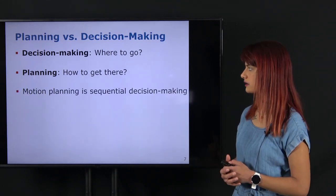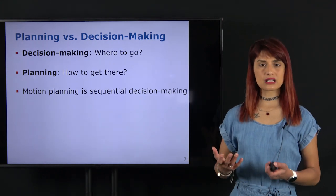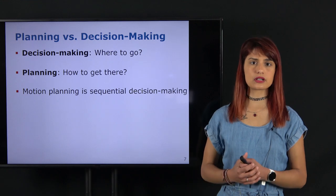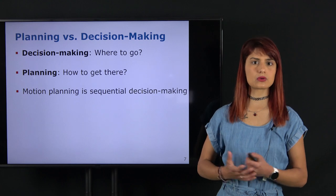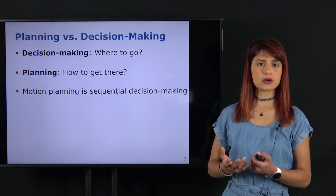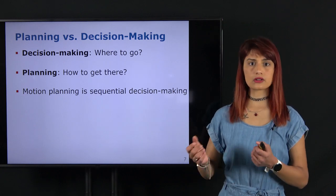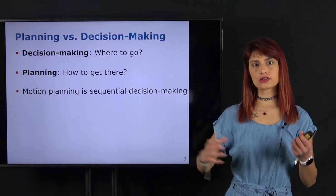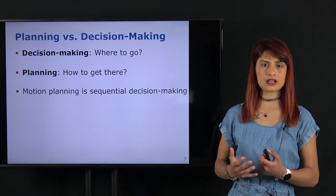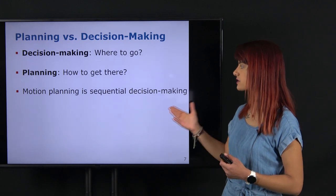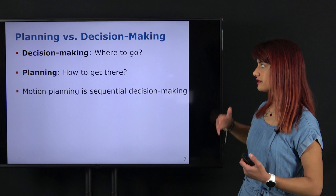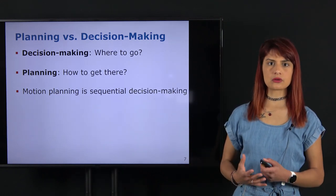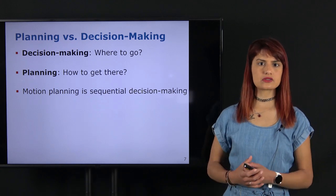One might ask: when we talked about motion planning and finding the shortest path from start to goal, weren't we also doing decision-making? In that case, we worked with connected road maps through which the robot moves, deciding how to connect edges of a graph to take the robot from start to goal collision-free. The answer is yes — motion planning is essentially sequential decision-making. But in this module we draw the distinction because decision-making is a more general and higher-level task of robot autonomy, and we want to tackle these two problems in different ways.